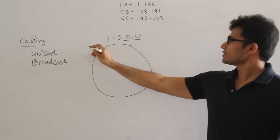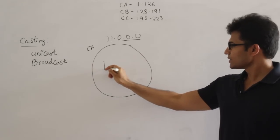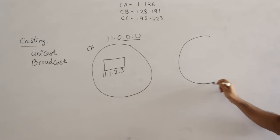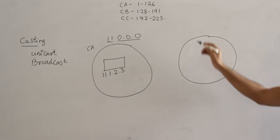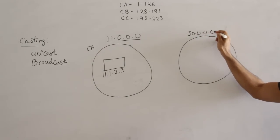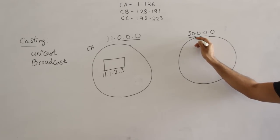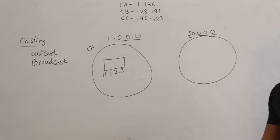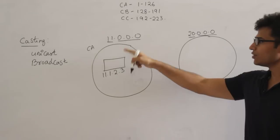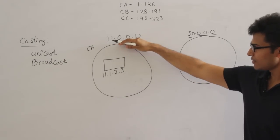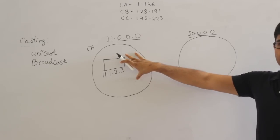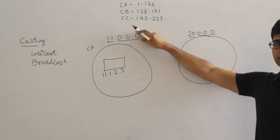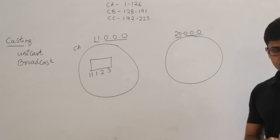Say the IP address of this host is 11.1.2.3. From this host I want to send a message to one host in the other network, say 20.0.0.0, which is also Class A with network ID 20 and host ID all zeros. Whenever the host ID part is all zeros, that represents the network ID. That's why we never use the first IP address for any host — it's reserved as the network ID. So we can configure only (number of IP addresses minus 2) hosts.